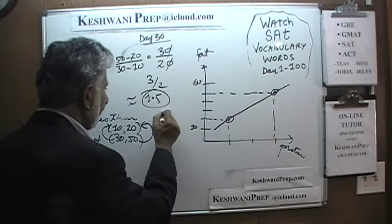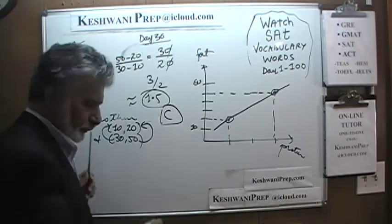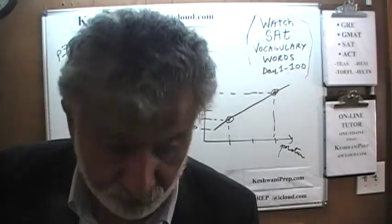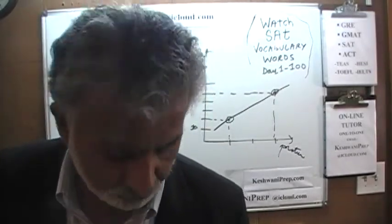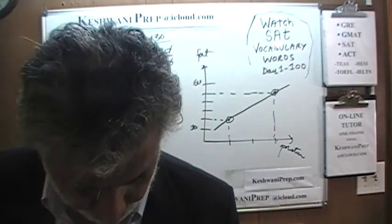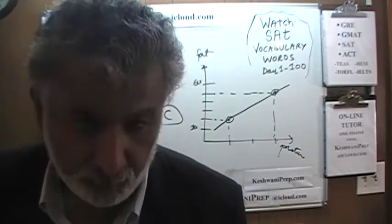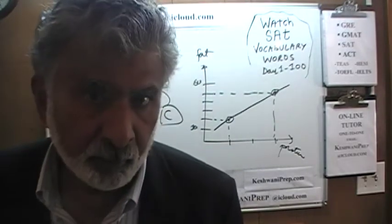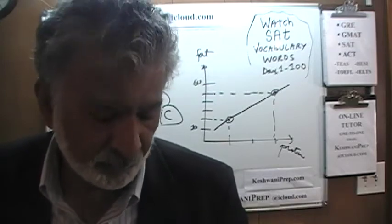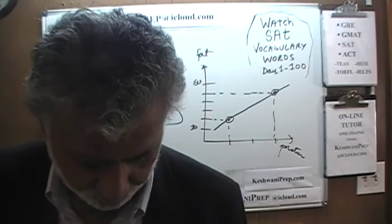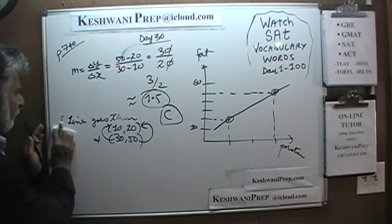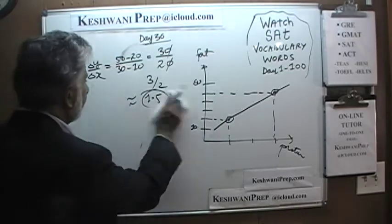The answer is C. Obviously it is not the exact slope — they give you the approximate value, and it turns out to be 1.5. The answer is C. Let's do the next one — last one on the page.